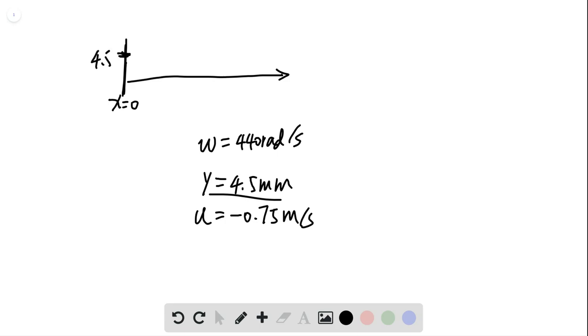And we're told that this wave has a general form of y equals ym sine kx minus omega t plus phi. And we have a phase constant phi.